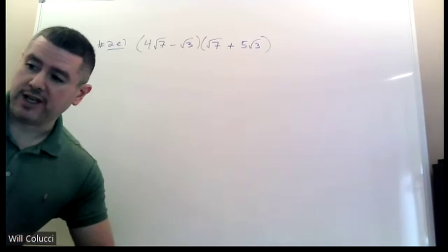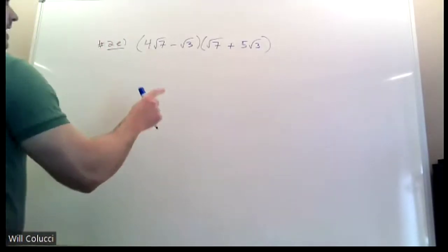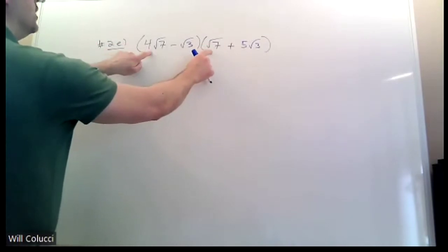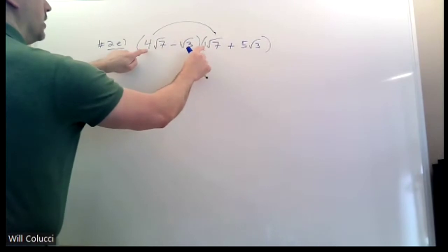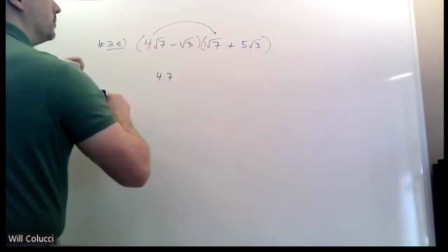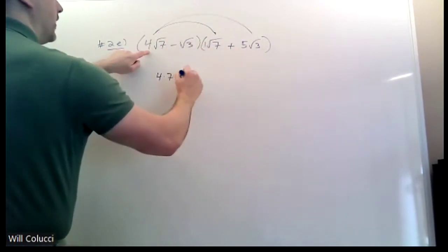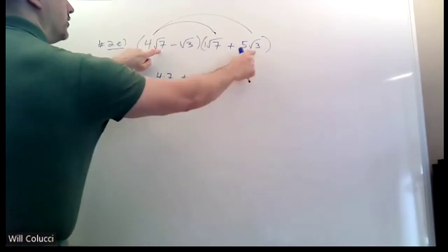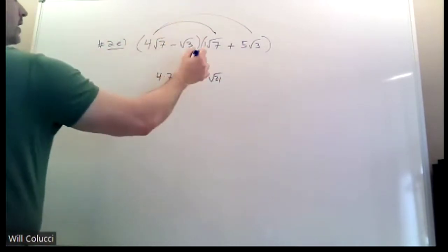So this is 2E from the practice exam that we did in class. So again, FOIL. If you need to put little ones here, you can put ones here. 4 times 1 is 4. Radical 7 and radical 7 make 7. Now you do the outer. First outer. 4 times 5 is 20. Radical 7 and radical 3 make radical 21. That's it. I did first outer.